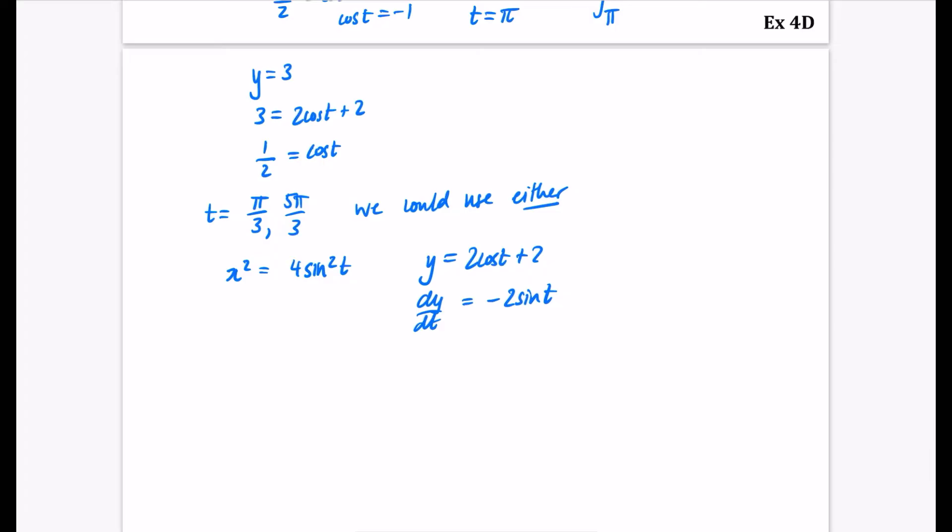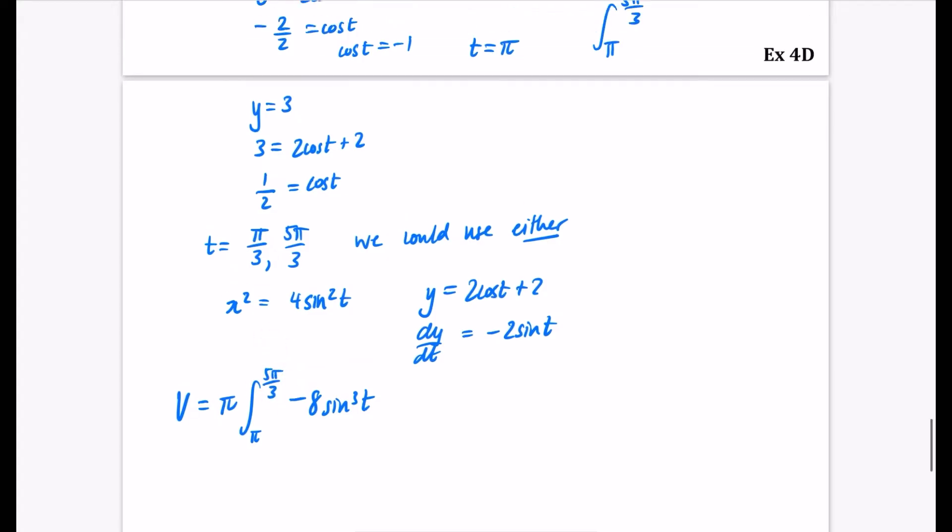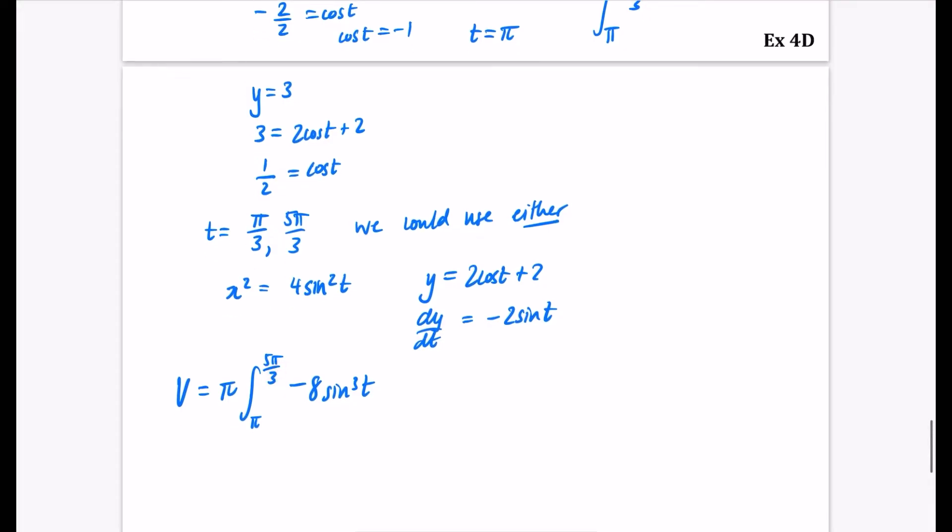So now we can actually go straight in with the volume. So it is π, the integral between π and 5π/3, multiplied by these two things multiplied together, which is -8sin³(t). Now, I'm going to pull that -8 to the front. So we get -8π between π and 5π/3. And here comes the challenging part, is knowing how to integrate sin cubed.